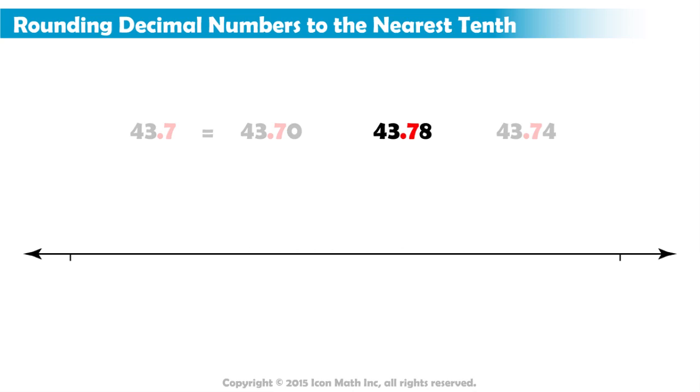Let's use a number line and learn about the general rounding rule. This line shows 43 and 7 tenths on the far left and 43 and 8 tenths on the far right. Why did we choose these two benchmarks?